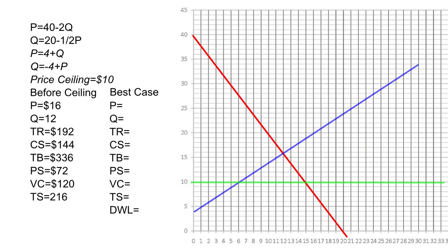What we're going to do here is take this demand curve, which can be represented by either of these first two equations, and this blue supply curve, which can be represented by either of these two equations, and we're going to look at the impact of a price ceiling of $10.